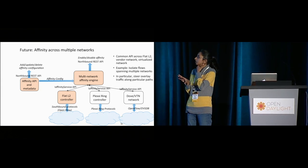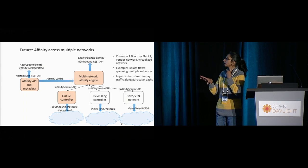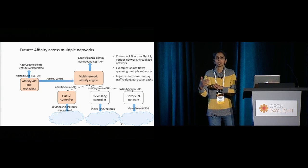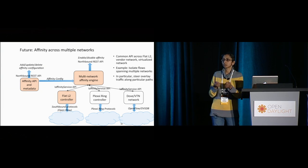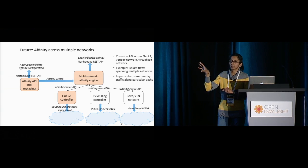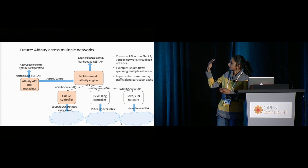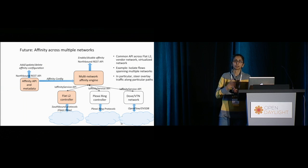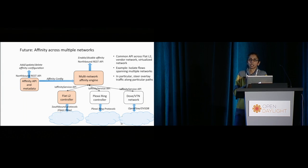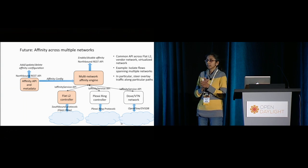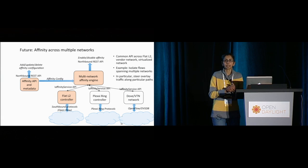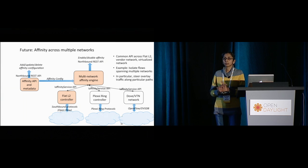Once we have different types of networks under OpenDaylight control, the Affinity API can be the single way to do all application-network control operations. An administrator or external application programs through the same API, while the affinity engine internally controls different segments — whether an OpenFlow segment, a Plexi ring, or a DOVE/VTN edge network. This becomes very powerful because the application no longer needs to know the internal details of each network; it goes through this higher-layer abstraction and remains completely unaware of what's underneath.